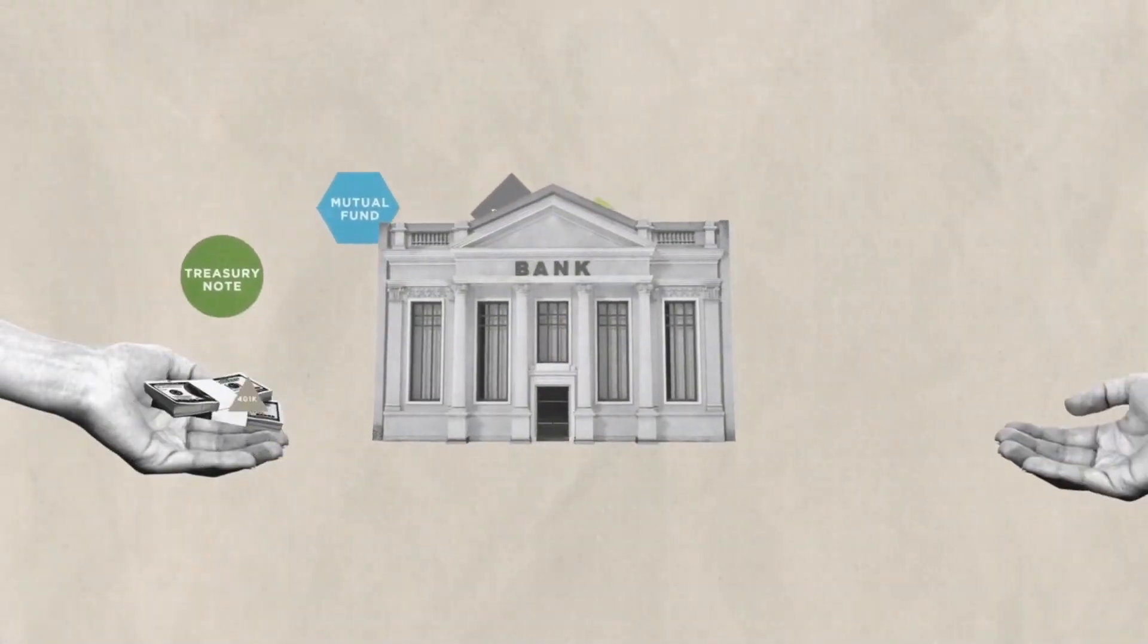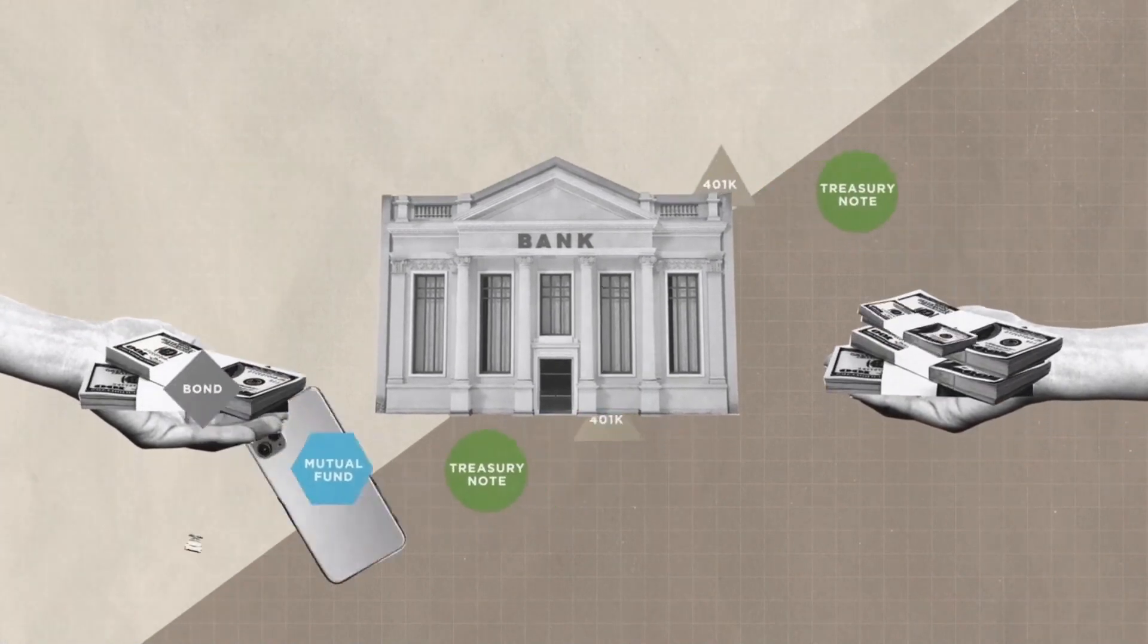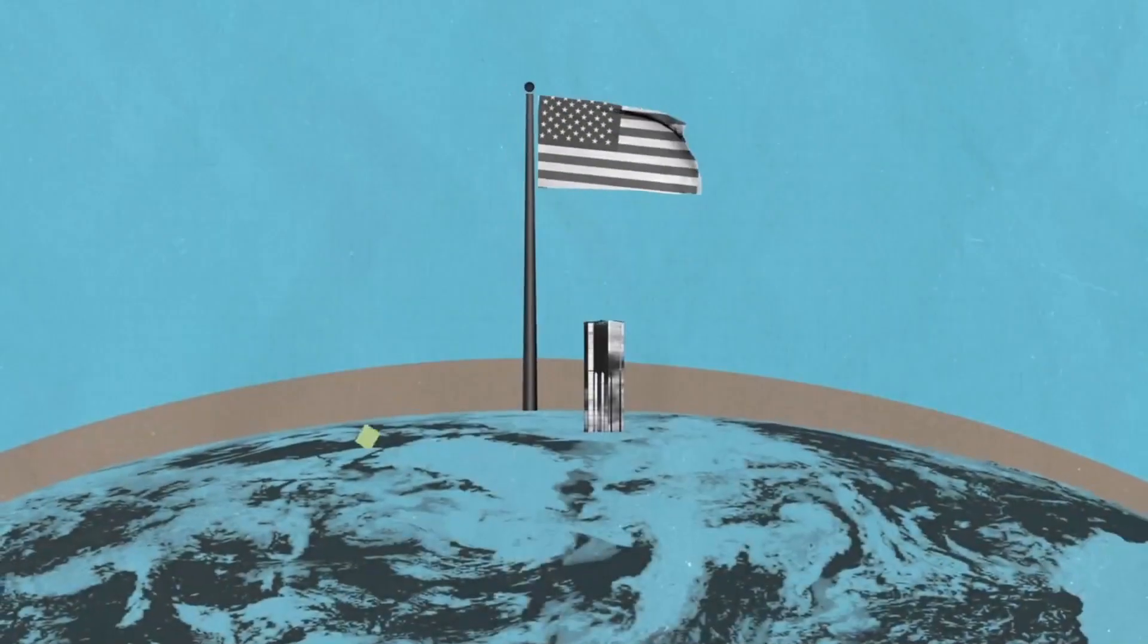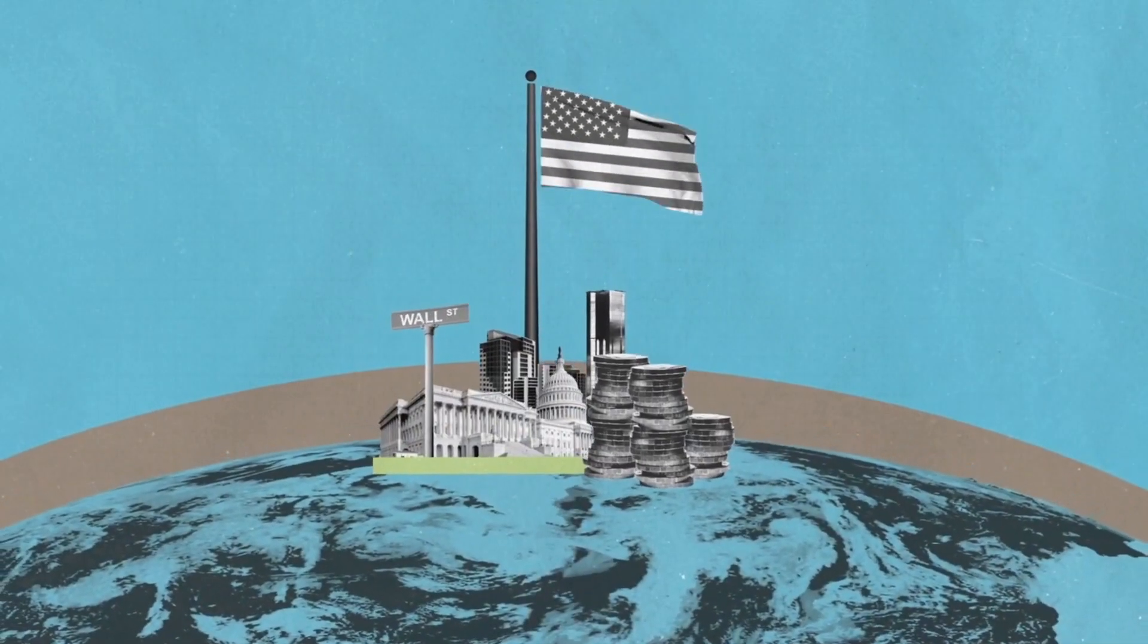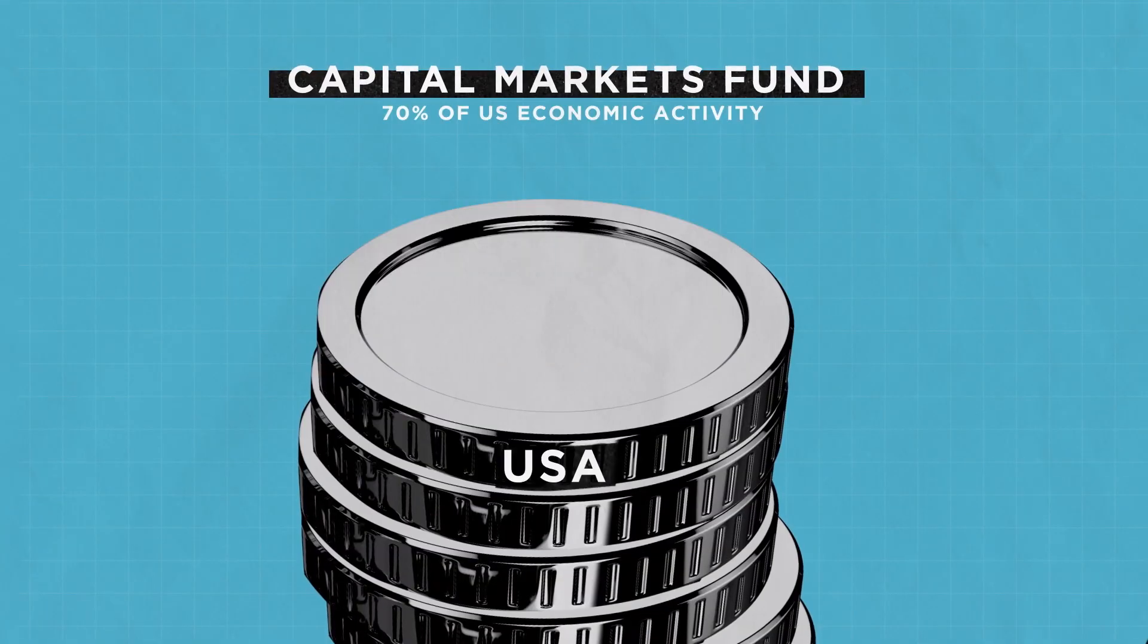And it's our citizens, through the ownership of mutual funds, pension funds, and life insurance, who are the beneficiaries of the wealth created. America has the deepest and most liquid capital markets in the world, funding over 70% of all economic activity in the U.S.